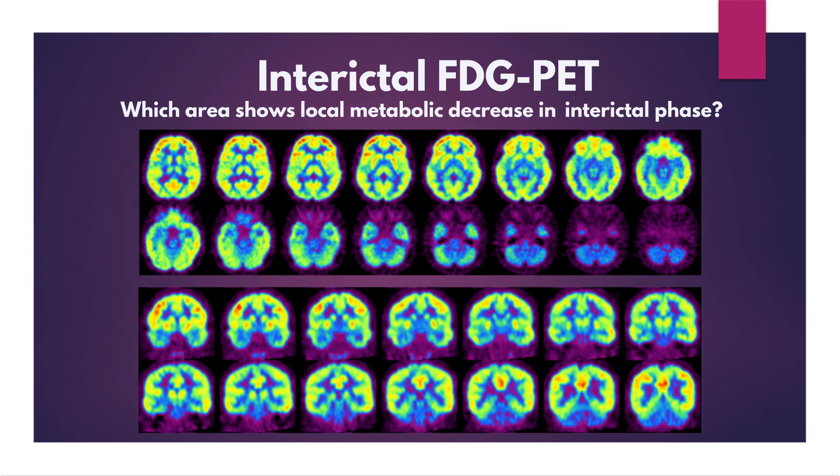This is a quiz case. FDG PET during the interictal phase in a patient with epilepsy. In which areas is there hypometabolism indicative of epileptic focus? Pay attention to the difference between the left and right accumulations and think for 10 seconds.